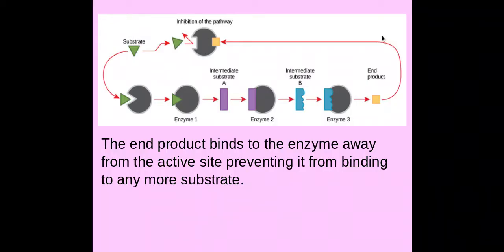The product effectively stops the production of more end product — and this is end product inhibition. I've only really seen this in a multiple choice question; it is not very popular on the exam.